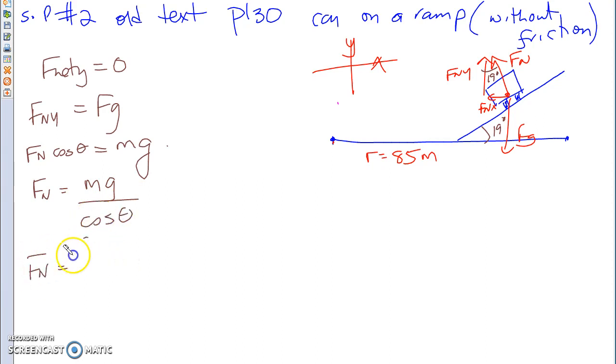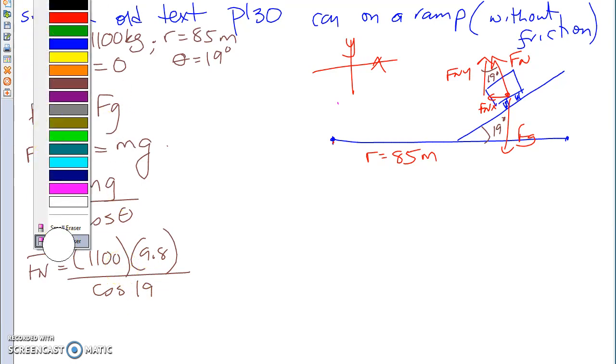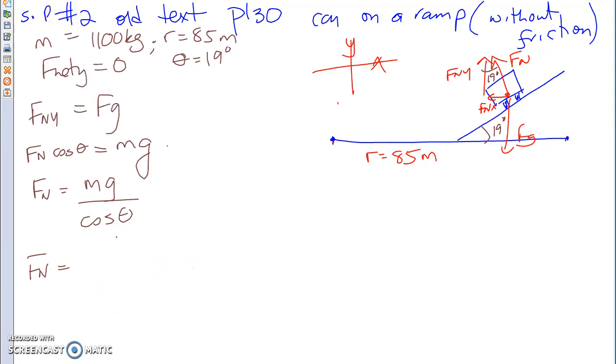And so, your Fn equals to mass of the car that was given was 1100 kg. So, R was 85 meters. And angle was 19 degrees. So, you're going to do 1100 times 9.8 divided by cos of 19. Now, you don't want to go about solving it. So, let's leave it as is. So, I'm just going to leave it as Mg divided by cos 19. It's easier to deal with it.